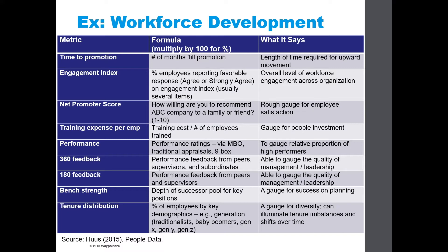For workforce development, we have time to promotion, engagement index, and net promoter score. Time to promotion is the number of months until promotion for a new employee. Employee engagement index has to do with overall positive feelings of employees about the organization — it's been shown to be related to productivity, low turnover, customer satisfaction, and many positive outcomes. Net promoter score, or NPS, is a rough gauge for employee satisfaction, asking employees how willing they are to recommend the company to family or friends.